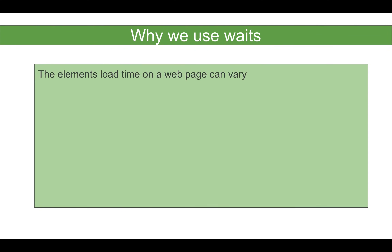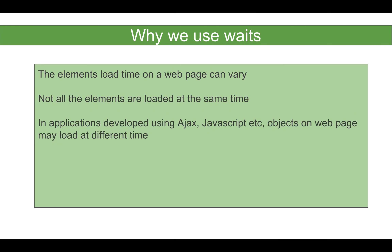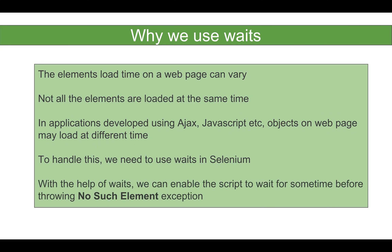Whenever you are working with any web application, the elements or objects on the web page may not all load at the same time. They can vary in their load time, and specifically if your web application is using Ajax or JavaScript, different objects may load at different times. To handle this in Selenium, we use waits, which enable our script to wait for a specific period of time before throwing a NoSuchElement exception.